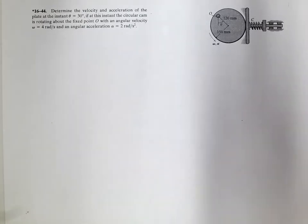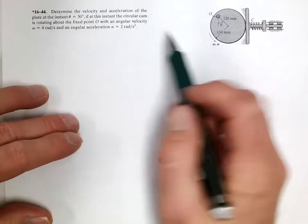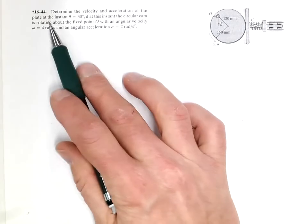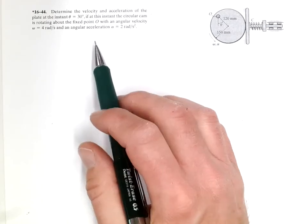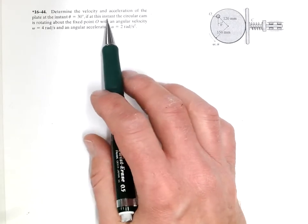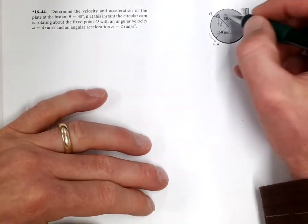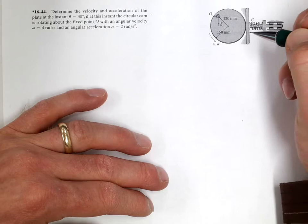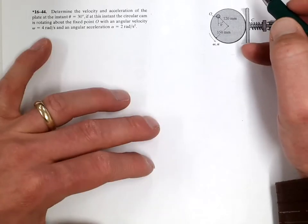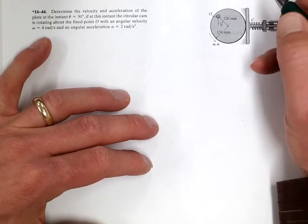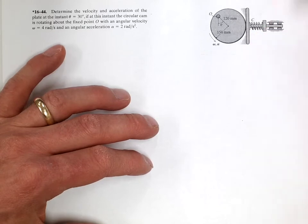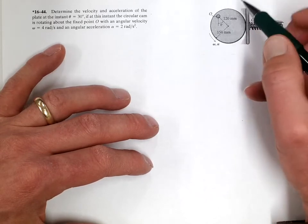Okay, let's solve problem 1644. Determine the velocity and acceleration of a plate at an instant theta equals 30 degrees. If at this instant the circular cam is rotating about a fixed point O with an angular velocity of omega equals 4 radians per second and an angular acceleration of alpha equals 2 radians per second squared.